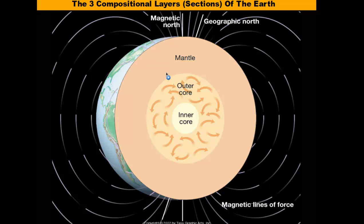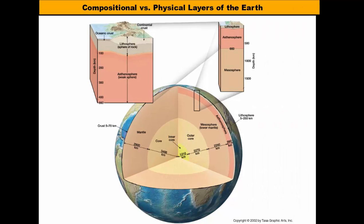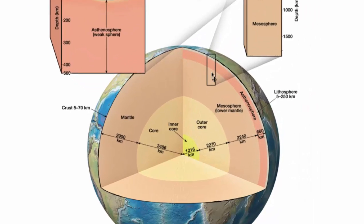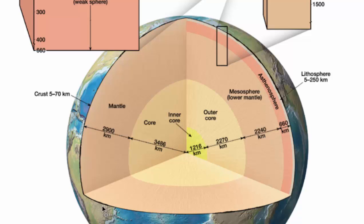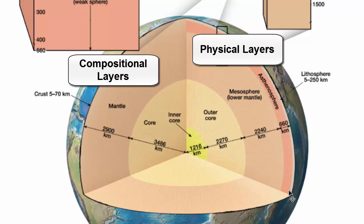These three compositional layers can be broken up into five physical layers. If we take a look at this picture, the earth has been cut open again — we have a big wedge taken out of it. On the left we have our three compositional layers, and on the right we have our five physical layers.